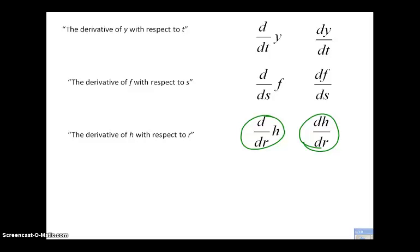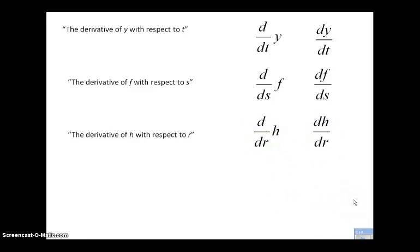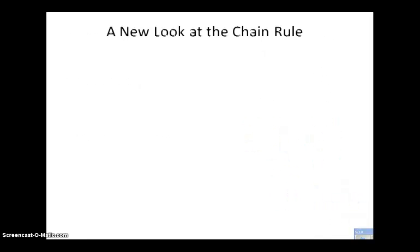Could they ask for the derivative of the independent variable with respect to the dependent variable — for example, dr/dh for a function h given in r? Yes, they could ask for that. But by and large, we're not talking about the slope of the tangent line at that point when we write it that way.